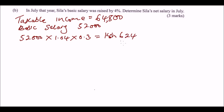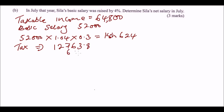Six hundred and twenty-four is the additional tax from the salary increase. We add this to the previous net tax of twelve thousand seven hundred and sixty-three point eight zero, and using your calculator you get thirteen thousand three hundred and eighty-seven point eight zero as the new total tax.